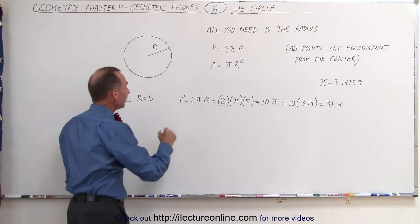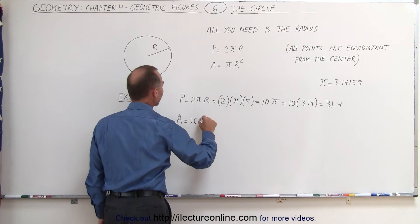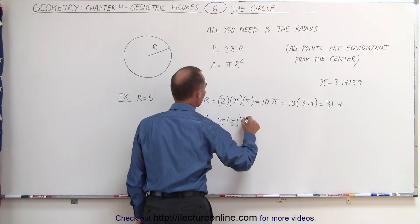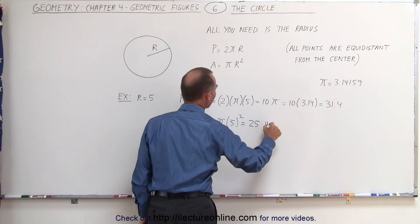Now to find the area, that is equal to π times r². In this case, that's equal to π times 5² or 25 times π.